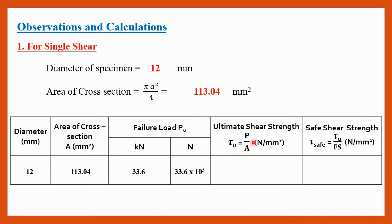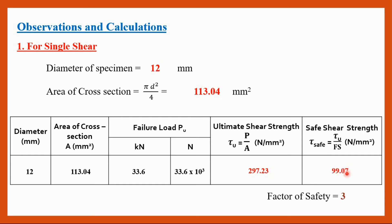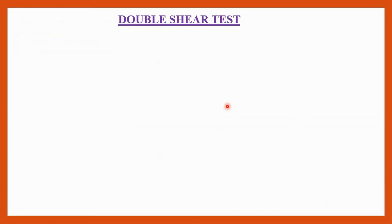The ultimate shear strength tau_u is equal to the ultimate load divided by cross sectional area. With the load in Newton and area in mm square, the value is 297.23 Newton per mm square. With a factor of safety of 3, we divide by 3 and get the safe shear strength as 99.07 Newton per mm square. This is the safe shear strength of the aluminum specimen in single shear.